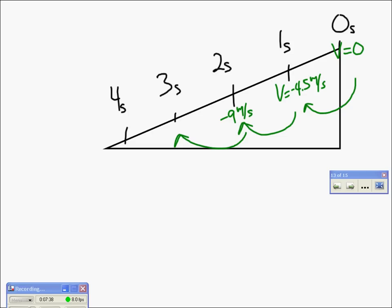And add on another 4.5 when we get to here, we are now at negative 18 meters per second. So adding on 4.5 each second gets me to 18 meters per second after 4 seconds. So that should make sense to me.